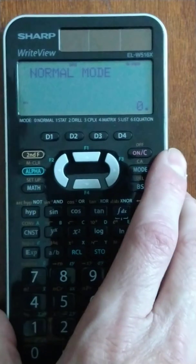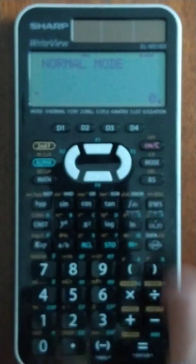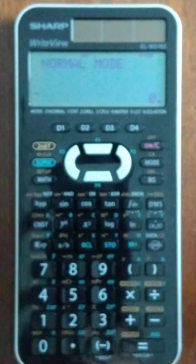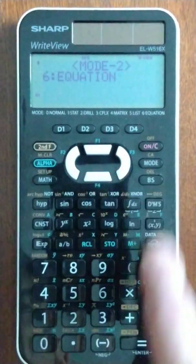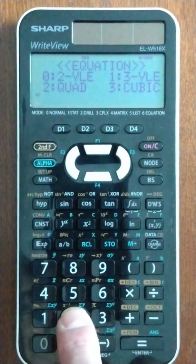Sharp. Similar to the Casio in function overall, and we're going to go into mode number 6. We're doing a quadratic.